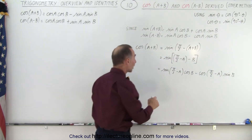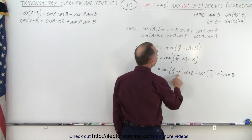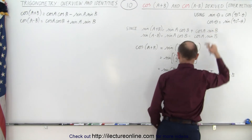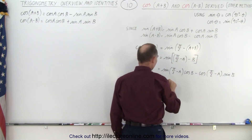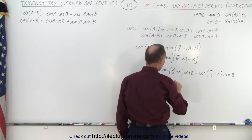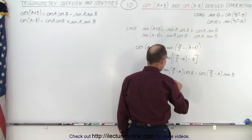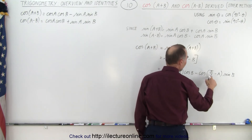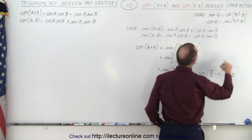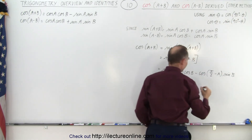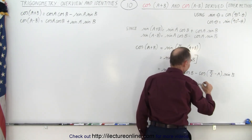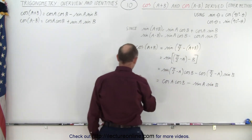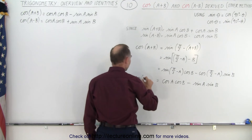Now we have the sine of (pi over 2 minus a). That is sine of 90 degrees minus theta, which is the same as the cosine of theta, so this is replaced by the cosine of a, times the cosine of b. And the cosine of (pi over 2 minus a) — since cosine of 90 degrees minus theta equals the sine of theta — gives us minus the sine of a times the sine of b. That gives us the cosine of the sum of the two angles, a plus b, which is exactly what we're looking for.